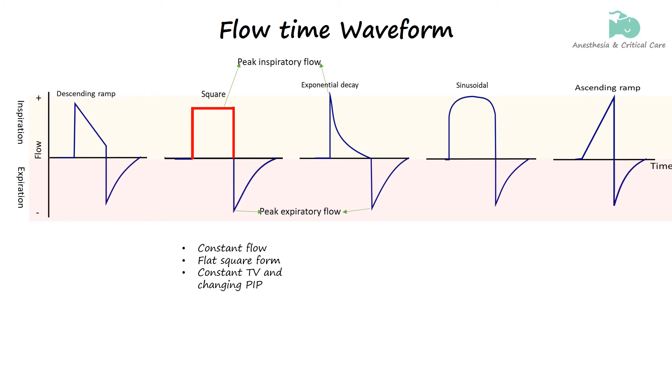The descending or decelerating flow waveform seen in pressure-controlled ventilation and some volume modes starts with a high flow rate that gradually decreases during inspiration. This flow pattern improves gas distribution and reduces peak pressures.